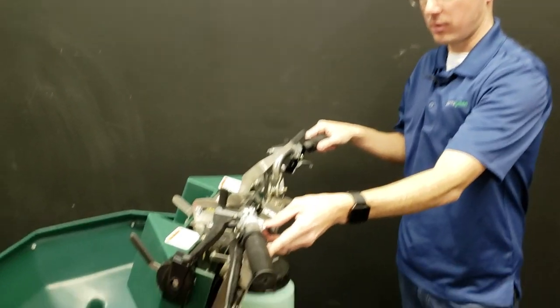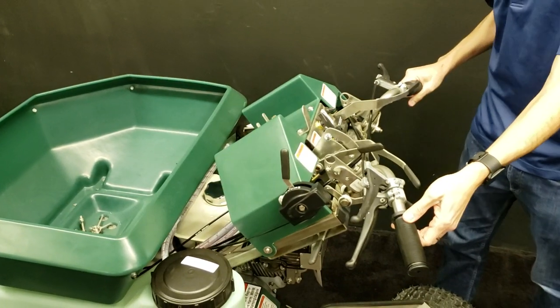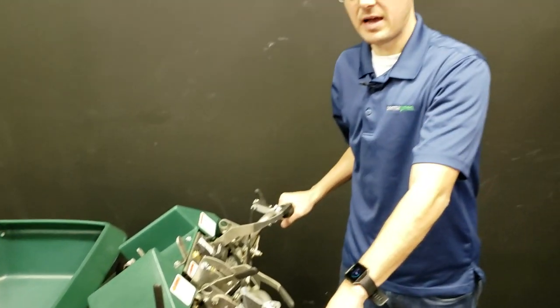So first we have the drop-down handlebars. You can see here, I pull this handlebar down and these handlebars drop down. What this does is give the operator the ability to walk behind the machine, so if the operator comes across a tricky area like a tricky slope or a tight area that they just don't feel comfortable